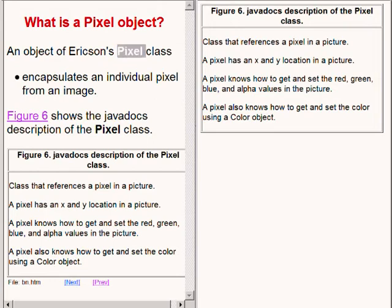The documentation for the pixel class is shown on the right hand side of your screen. According to Ericsson this is a class that references a pixel in a picture. A pixel has an x and y location in a picture. A pixel knows how to get and set the red green blue and alpha values in the picture. A pixel also knows how to get and set the color using a color object.